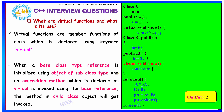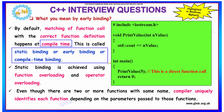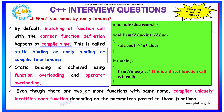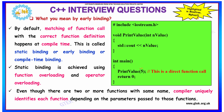What do you mean by early binding? By default, matching of a function call with the correct function definition happens at compile time. This is known as static, early, or compile-time binding. Static binding is achieved using function overloading or operator overloading. Even when there are two or more functions with the same name, the compiler uniquely identifies each function based on the parameters passed, only during compile time.